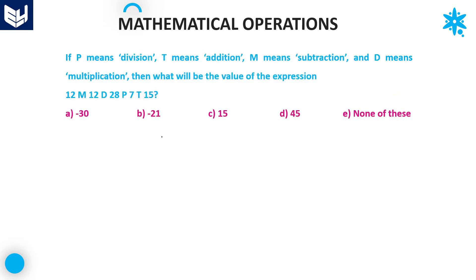Let's move on to the next question. Here, P means division, T means addition, M means subtraction, and D means multiplication. Four letters are given with four arithmetic operations.